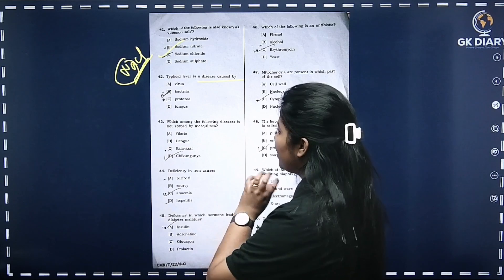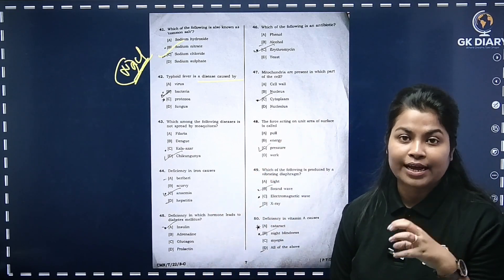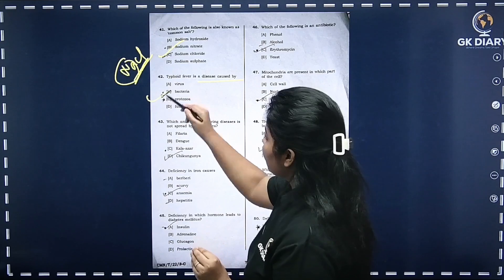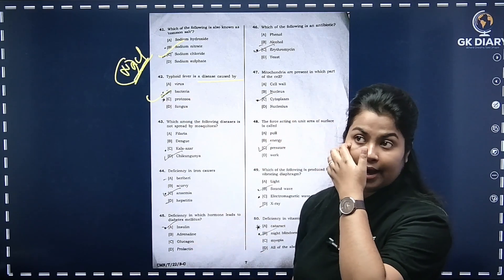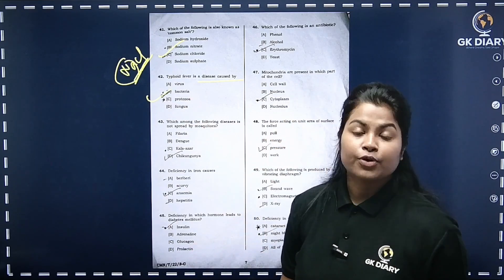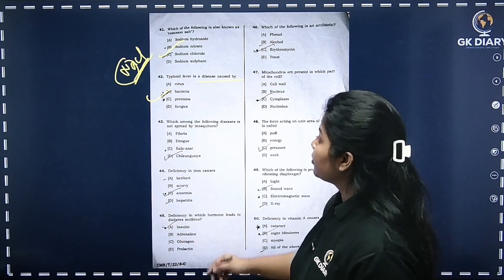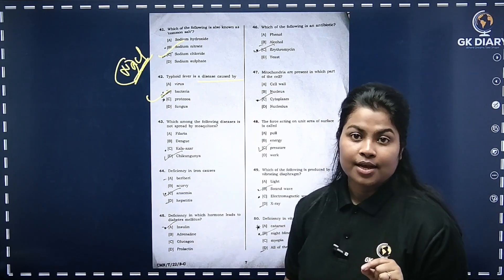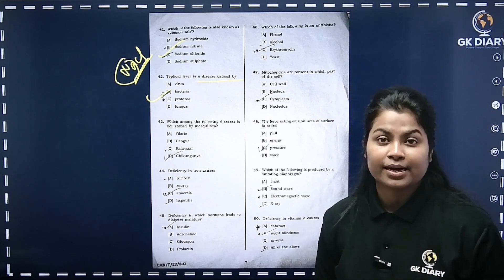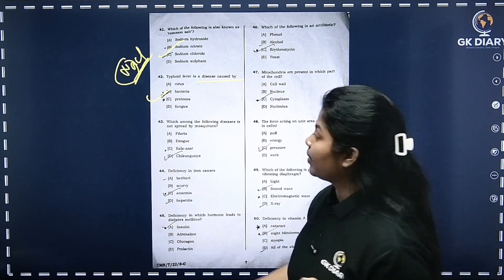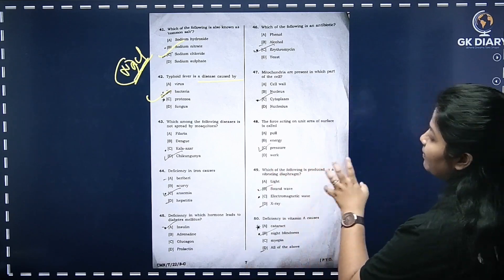Sodium chloride discussion leads to typhoid fever — a disease caused by Salmonella typhi, which is a bacteria. The question is whether it is a virus or bacteria. Vibrio cholerae is also a bacteria. Which among the following diseases is not spread by mosquitoes? This question is very important.